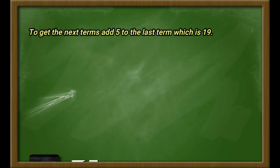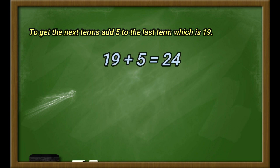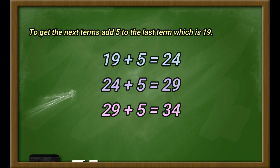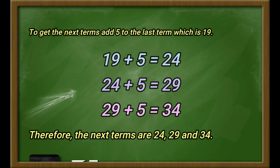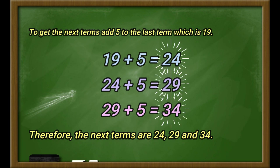To get the next terms, add 5 to the last term which is 19. 19 plus 5 equals 24. 24 plus 5 equals 29. And finally, 29 plus 5 equals 34. Therefore, the next terms are 24, 29, and 34.